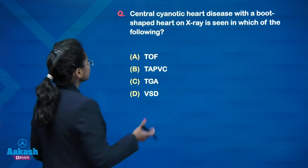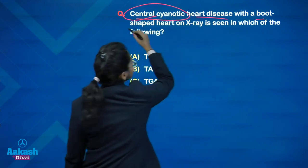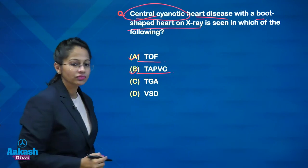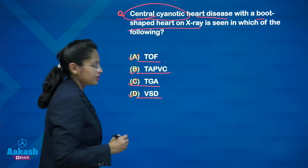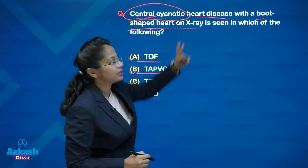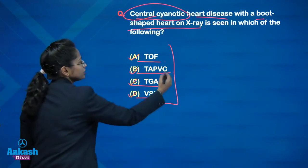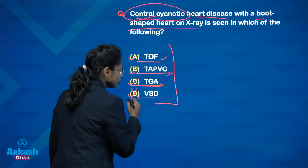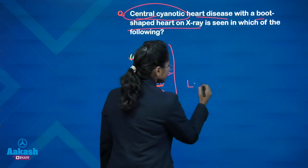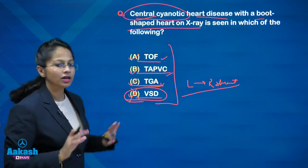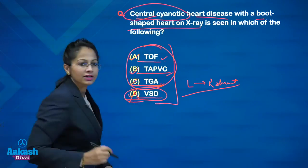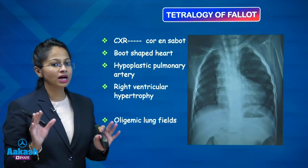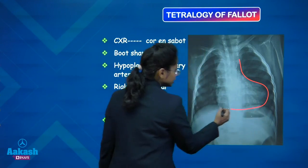Next question: central cyanotic heart disease with a boot-shaped heart on X-ray is seen in which condition? Options: Tetralogy of Fallot (TOF), TAPVC (total anomalous pulmonary venous return), TGA, and VSD. VSD is an acyanotic congenital heart disease with left-to-right shunt, so it is eliminated. The boot-shaped heart — also known as coeur en sabot appearance — is seen in Tetralogy of Fallot due to right ventricular hypertrophy.